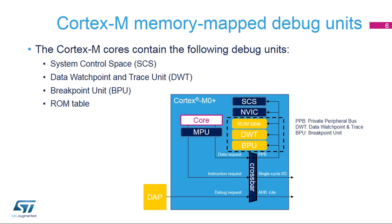All units involved in the debug process have memory-mapped registers accessible through the private peripheral bus by both the core and the DAP. The debugger can access memory-mapped resources while the processor is running. For example, a breakpoint can be set by the debugger by accessing the breakpoint unit connected to the private peripheral bus while the processor is executing instructions. The ROM table contains pointers to the base addresses of each debug component visible from the core, used by some debug tools to automatically detect the topology of the CoreSight infrastructure in the target.